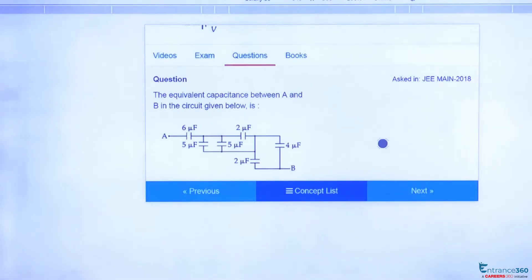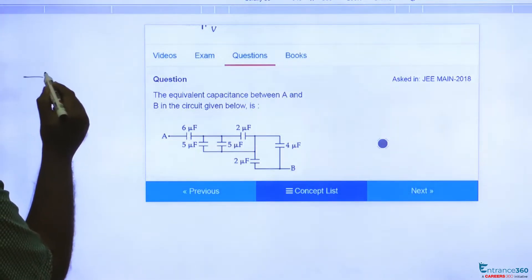Hello students, we have a question from electrostatics which was asked in 2018 JEE Mains. The question says that you have to find the capacitance between A and B. Let's redraw the circuit here. We have 6 microfarad.